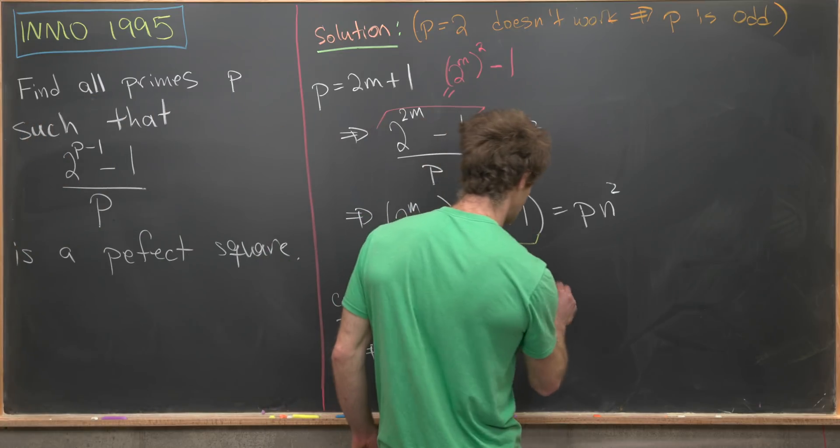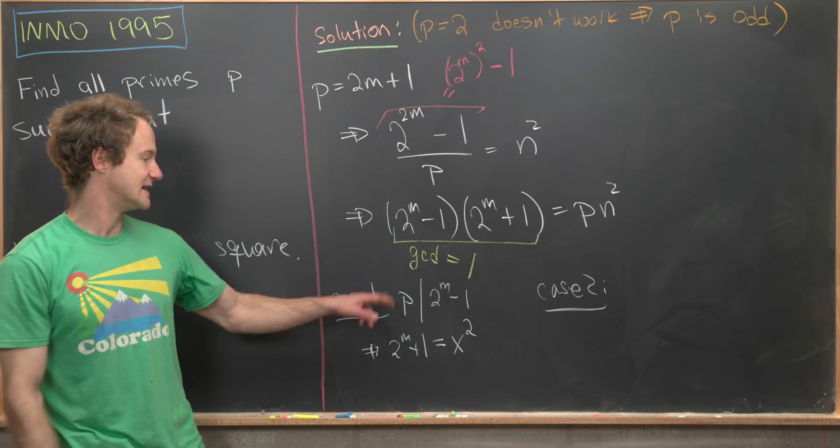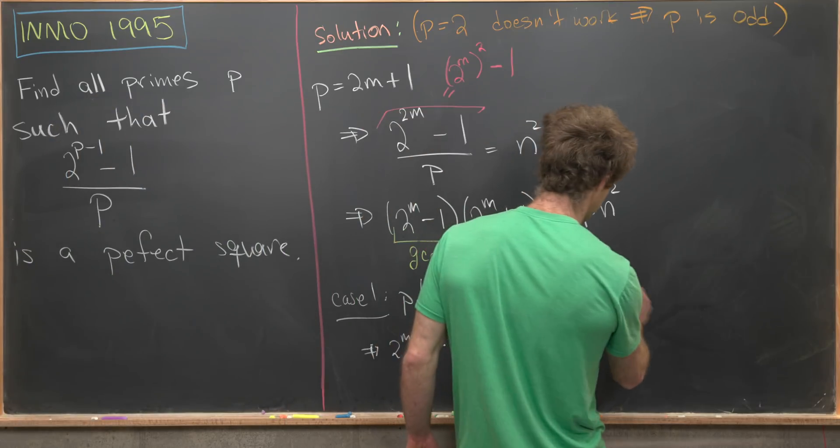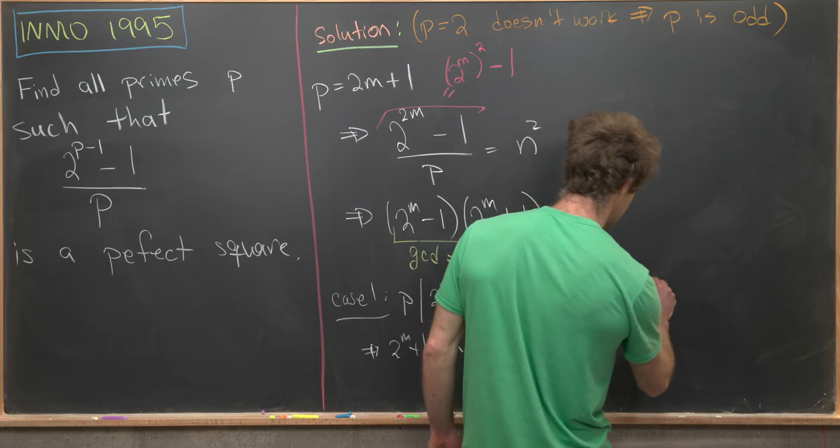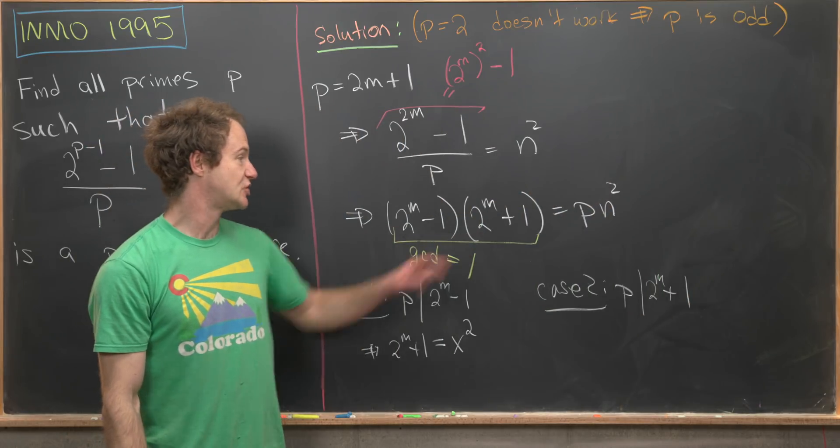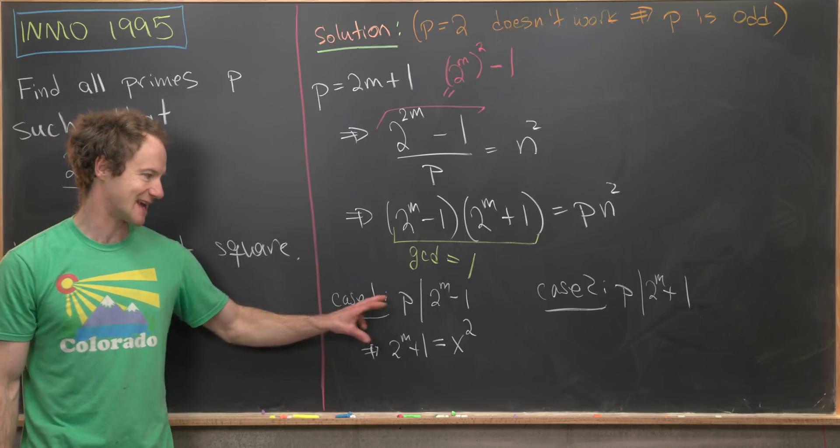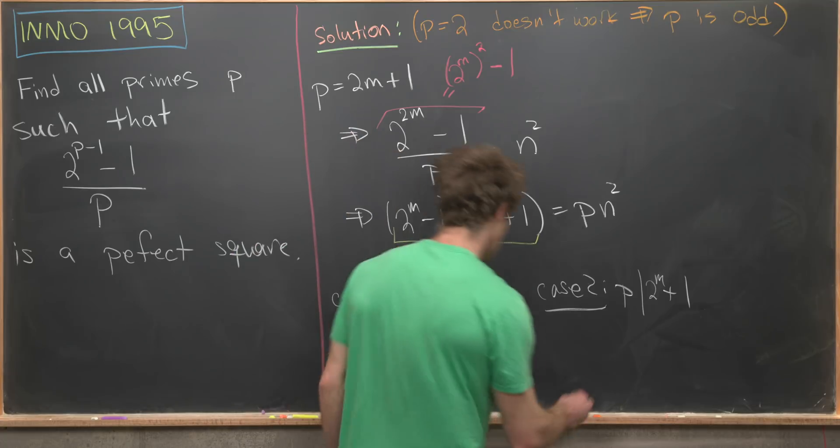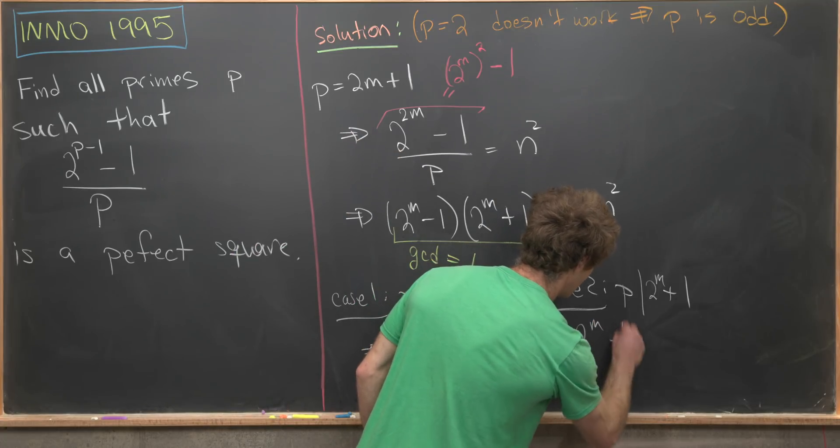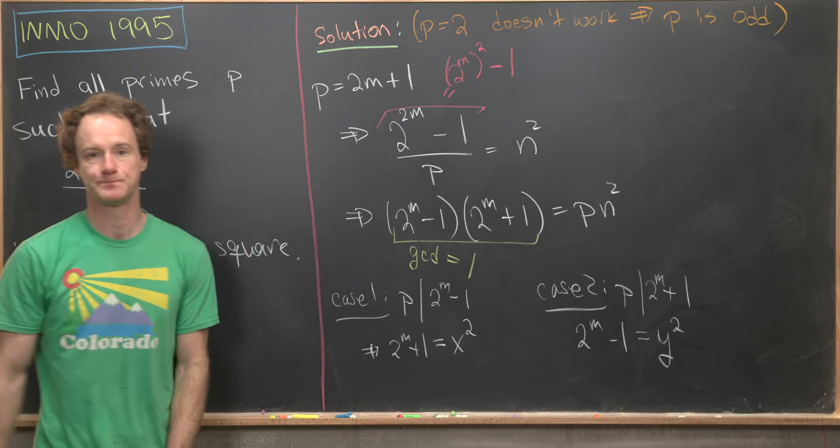And then we can bring ourselves to case two, which is essentially the same. And that is if p divides the other one. So let's say that p divides 2^m + 1. That means that 2^m - 1 is a perfect square by an argument that's exactly the same as what happened here. So I'll write that 2^m - 1 is a perfect square. In this case, we'll call it y^2.